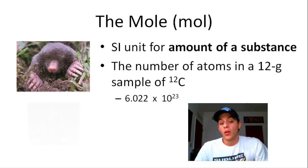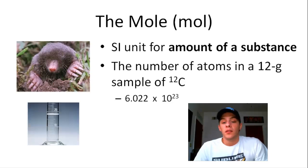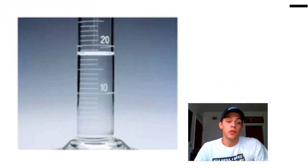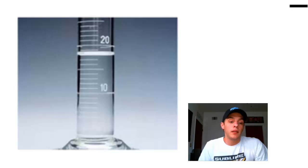So a mole of water would be 6.022 times 10 to the 23rd water molecules. And that turns out to be about 18 or so, roughly 18 milliliters of water. So the amount of water in this graduated cylinder here, this is about a mole of water. So that's the mole and there's SI units for you.